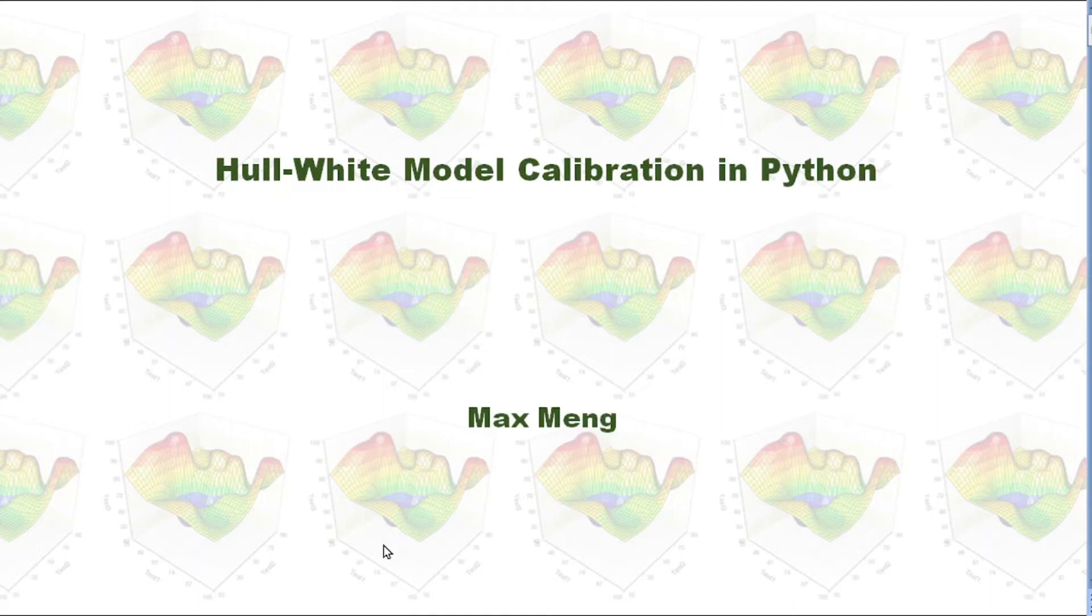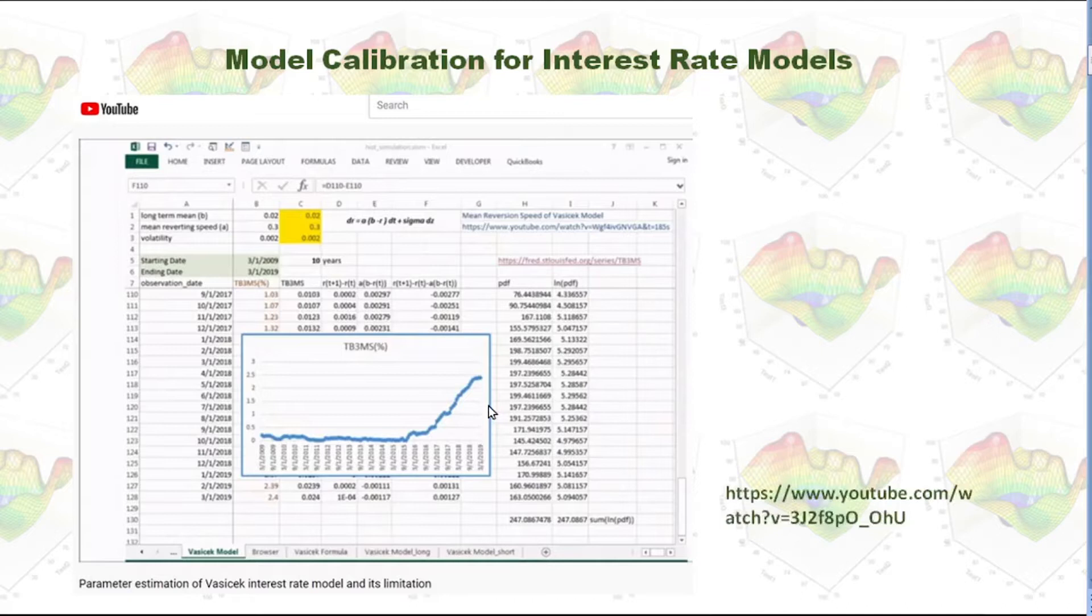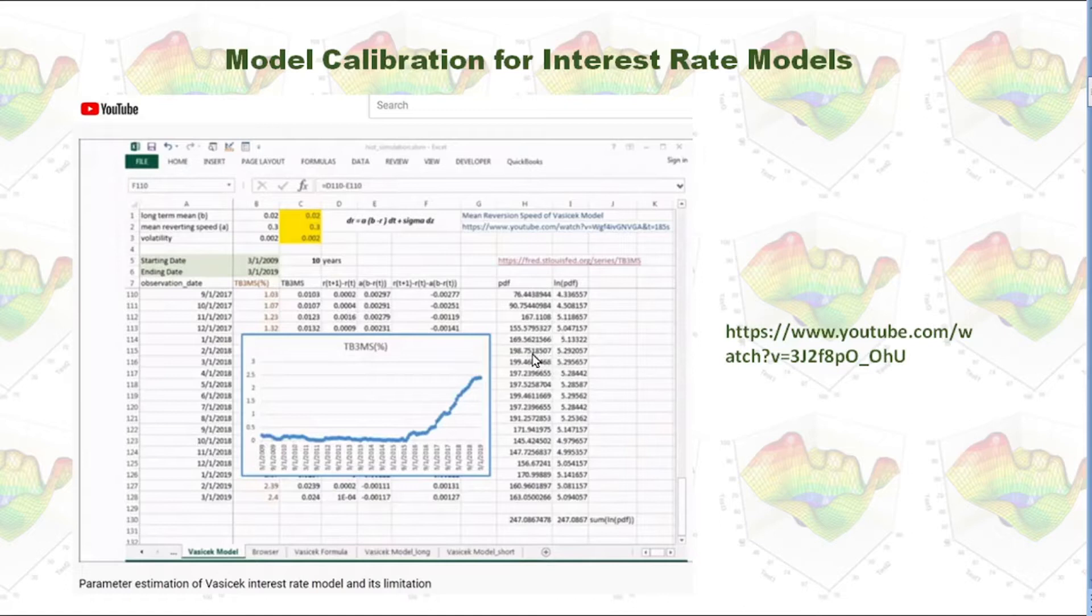This time, I'm going to talk about how we can calibrate the Hull-White model in Python. More than two years ago, I made a YouTube video on parameter estimation of Vasicek interest rate model and its limitation. If you haven't watched that video, you're welcome to go to my YouTube channel and watch that first. From viewers, I got a question asking how we can calibrate Hull-White model parameters. In this video, I'm going to answer this question.